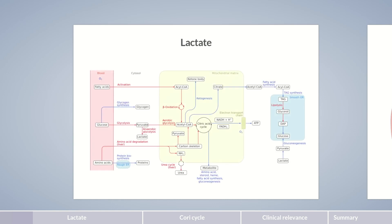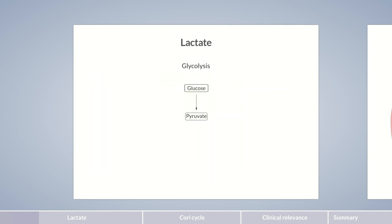In our last episode, we learned that lactate production is part of the oxygen-independent generation of ATP in the body. In glycolysis, glucose is initially degraded to pyruvate. In aerobic metabolism, the pyruvate dehydrogenase complex synthesizes acetyl-CoA from pyruvate, which can be converted to carbon dioxide in the citric acid cycle. Physiologically, the conversion of pyruvate to acetyl-CoA is irreversible.